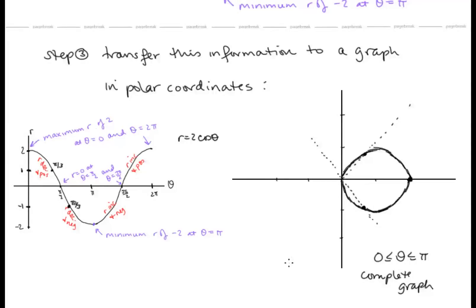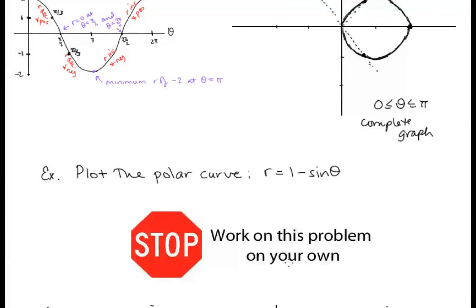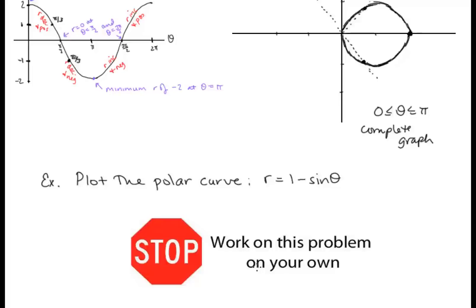Now let's plot the polar curve r equals 1 minus sine theta. Try this sketch the same way: first set up the graph of r equals 1 minus sine theta in rectangular r-theta coordinates, mark all the important information, and then translate that onto a polar graph. Please pause the video and work on that.